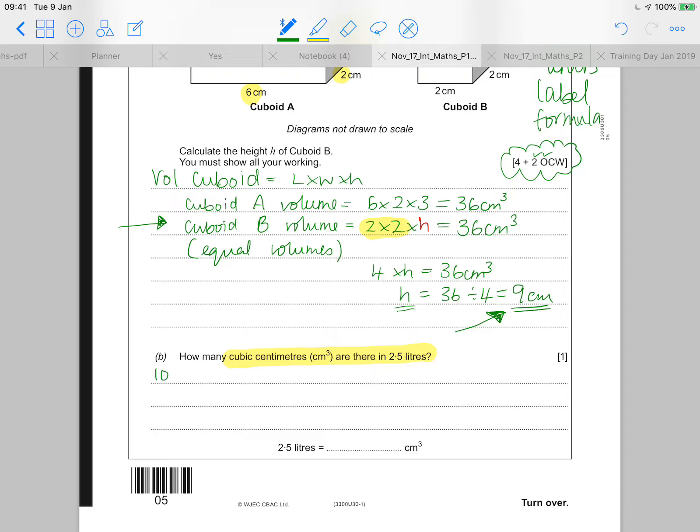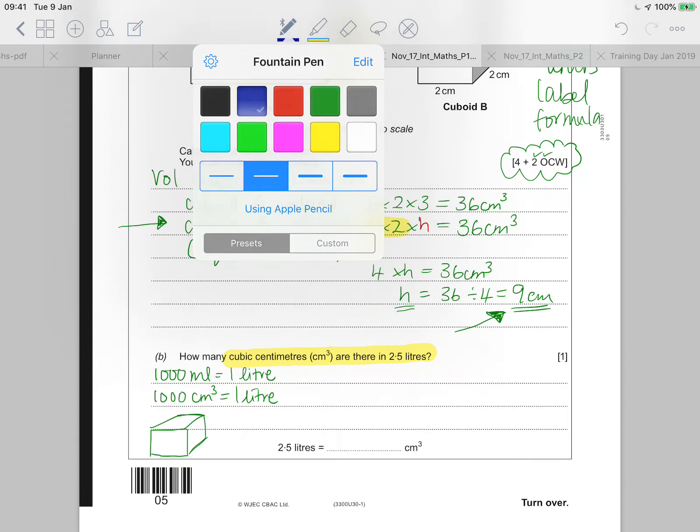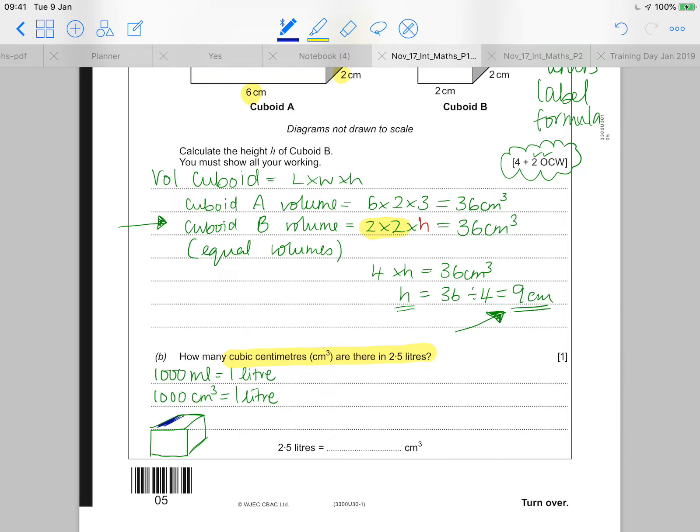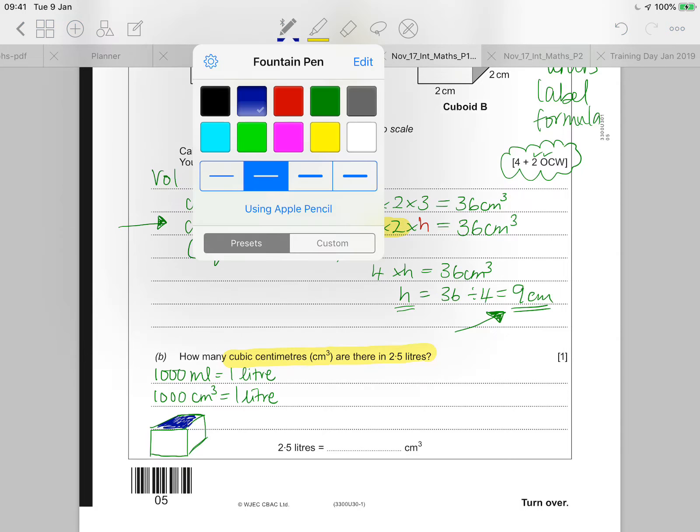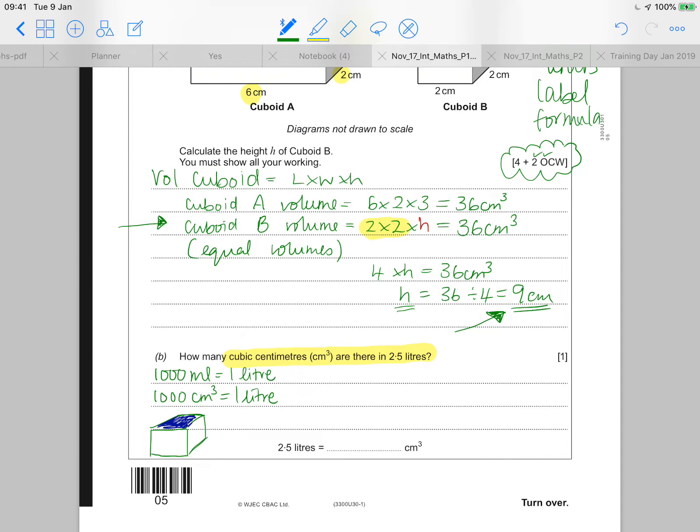So first thing that you need to know. There's 1000 millilitres in one litre, but also there's 1000 centimetre cubes in one litre. If you had a little Lego cube, which is one centimetre by one centimetre by one centimetre, you could fill it with water and it would hold one millilitre of water.